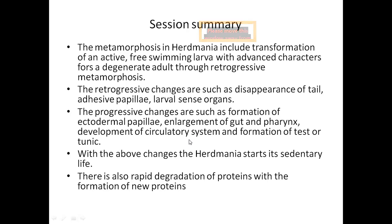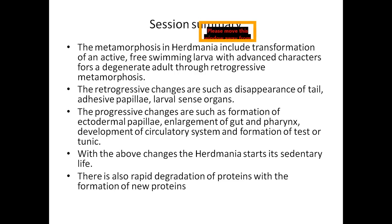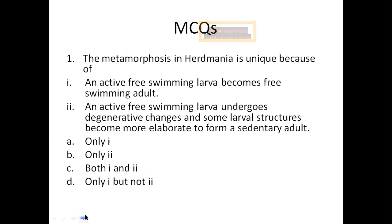A brief summary of what we have discussed in this video: We call it retrogressive metamorphosis because there is majorly complete disappearance of the tail, adhesive papillae, and notochord. Progressive changes include enlargement of the gut, pharynx, pericardium surrounding the heart, and formation of the gonads and gonoducts. These changes together result in forming a sedentary adult.